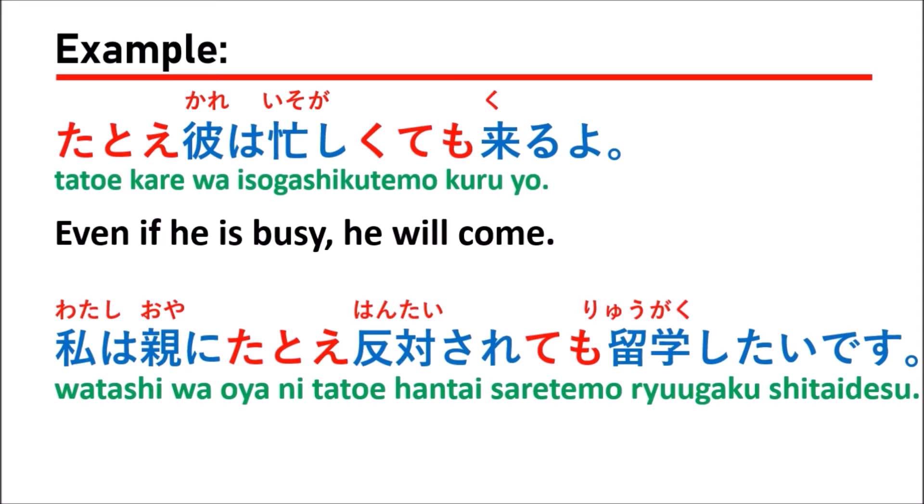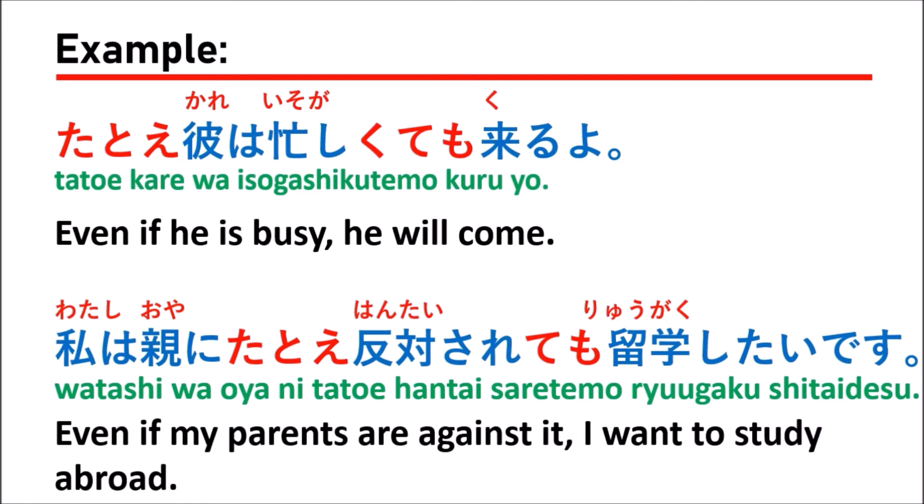Another example: 私は親にたとえ反対されても、留学したいです。 Which means 'even if my parents are against it, I want to study abroad.'